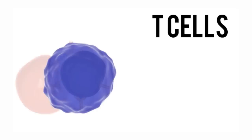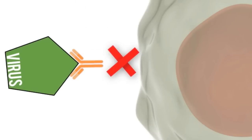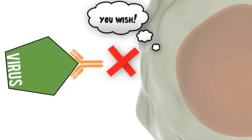Another way that an antibody can help protect your body is: say you have a virus trying to infect a healthy cell — an antibody can prevent that. The antibody here is preventing the virus from infecting the healthy cell. That's another cool way antibodies help your immune system.